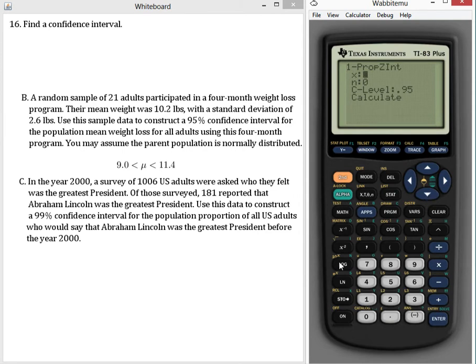Okay. So all we need to input is the number of people who qualify out of our sample. So 181, our sample size. So that's 1,006. And the level of confidence that we want to use is 99%. So we calculate.